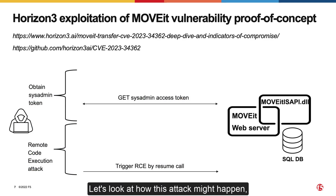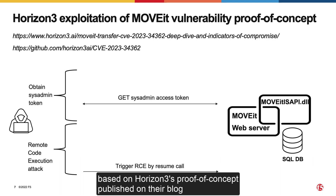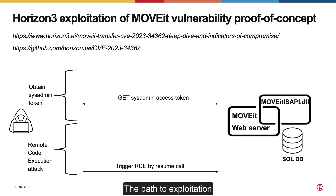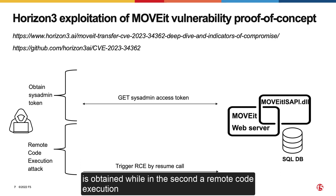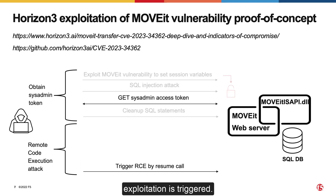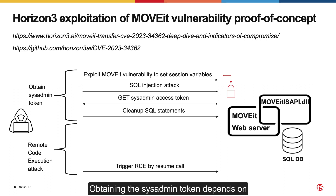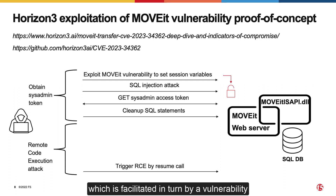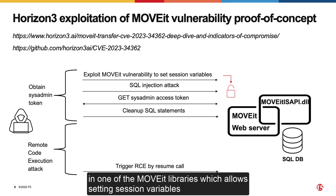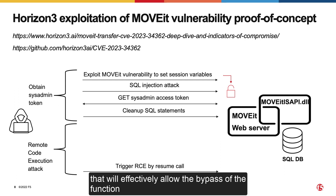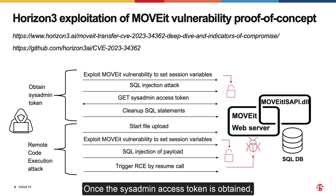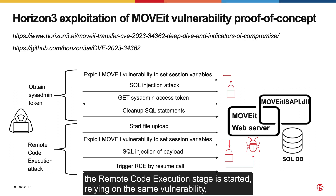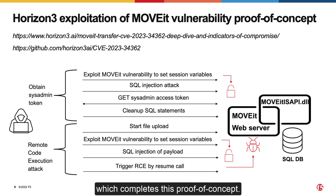Let's look at how this attack might happen based on Horizon 3's proof-of-concept published on their blog and GitHub repository. The path to exploitation has two stages. In the first stage, a sysadmin access token is obtained. In the second stage, a remote code execution exploitation is triggered. Obtaining the sysadmin token depends on successfully performing an SQL injection attack, which is facilitated by a vulnerability in one of the MoveIT libraries that allows setting session variables, effectively bypassing the function assuring neutralization of special elements used in the SQL command. Once the sysadmin access token is obtained, the remote code execution stage is started, completing this proof-of-concept.